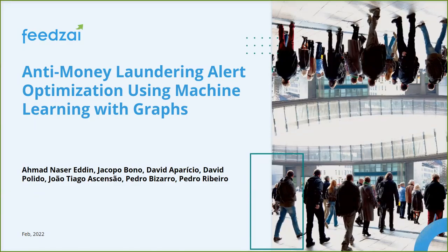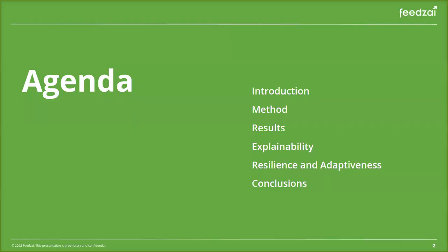Hello everyone, I am Ahmad Nasruddin and I'll be presenting our work in anti-money laundering alert optimization using machine learning with graphs. This work was developed together with my co-authors Jacob Bono, David Aparicio, David Bolido, Joao Shinsaw, Pedro Pizarro, and Pedro Khibeiro.